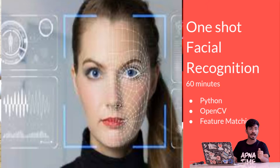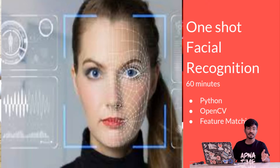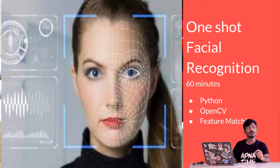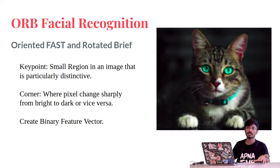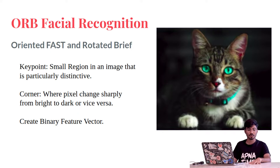ORB is scale invariant and rotationally invariant, and it requires only one image. ORB stands for Oriented FAST and Rotated BRIEF. There are actually two algorithms involved — FAST and BRIEF — but ORB uses a modified version of BRIEF and combines it with FAST.